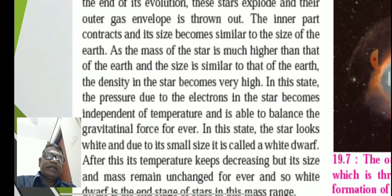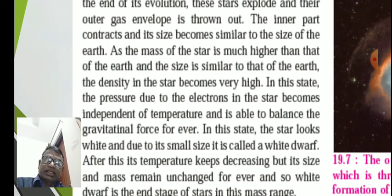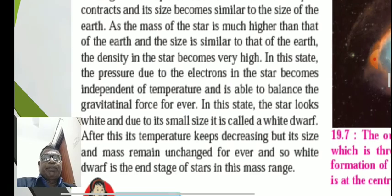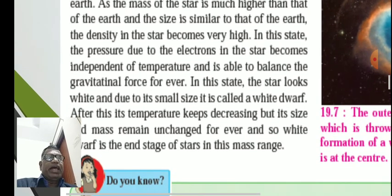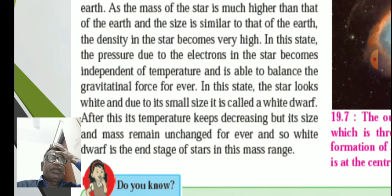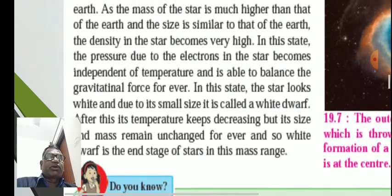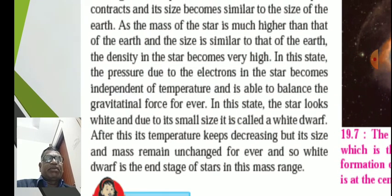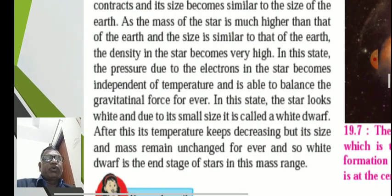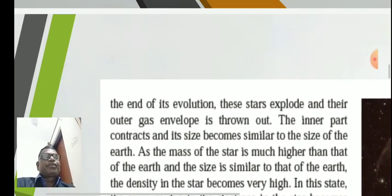The mass of the star is much higher than that of the earth and the size is similar to that of the earth. In this state, the pressure due to electrons in the star becomes independent of temperature and is able to balance the gravitational force. The star looks white and due to small size, it is called white dwarf. After this, its temperature keeps decreasing but the size and mass remain unchanged forever, and so white dwarf is the end stage of the star in this mass range.